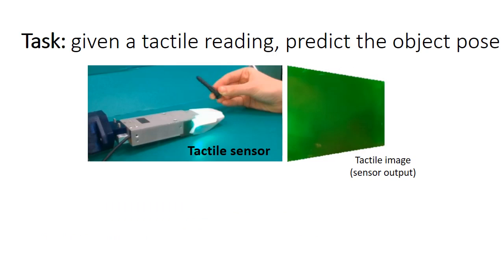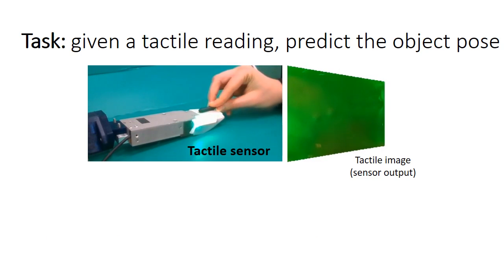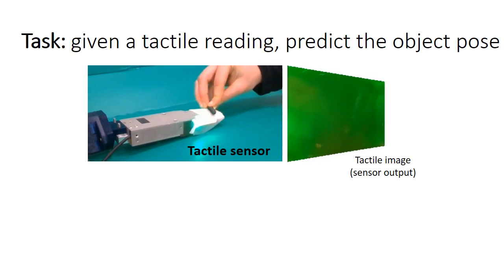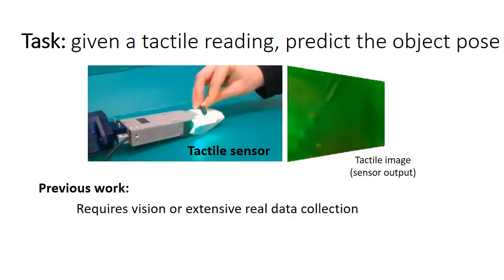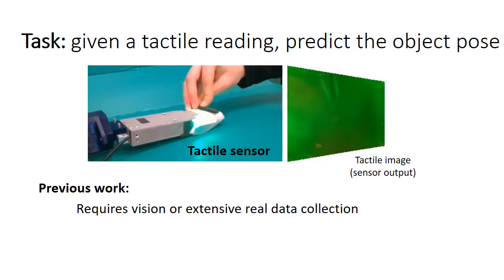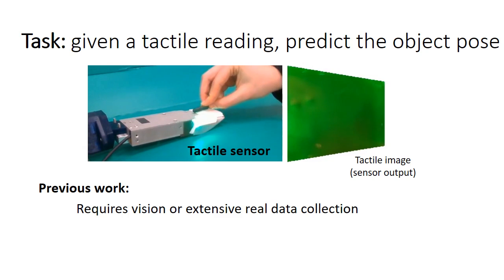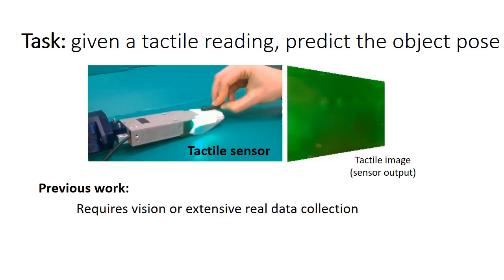In this work, we aim at improving perception by looking at the problem of tactile pose-localization, where when an object touches a tactile sensor, we need to predict from its output the pose of the object. Previous work on this problem has either used tactile as a complement to a vision system, or required a lot of data collection, which is often expensive and unpractical.